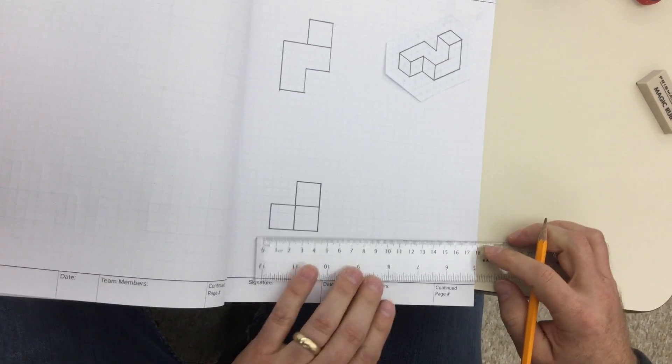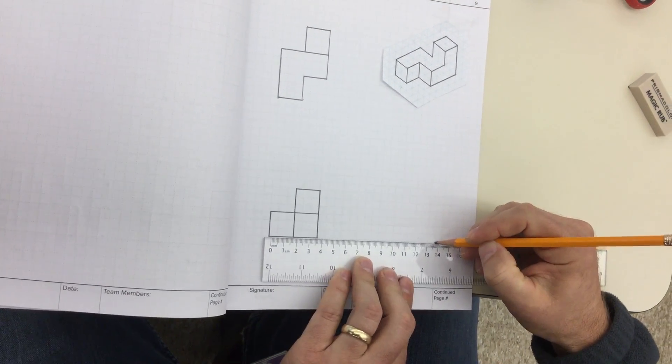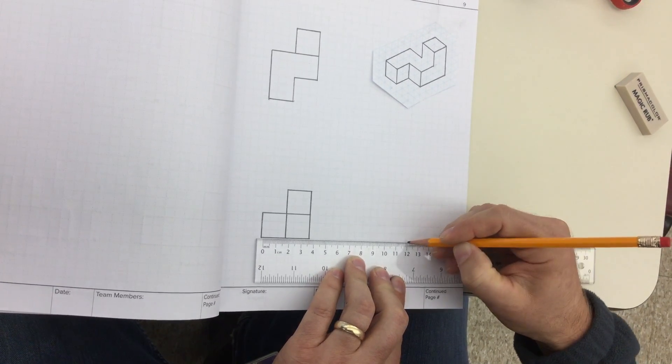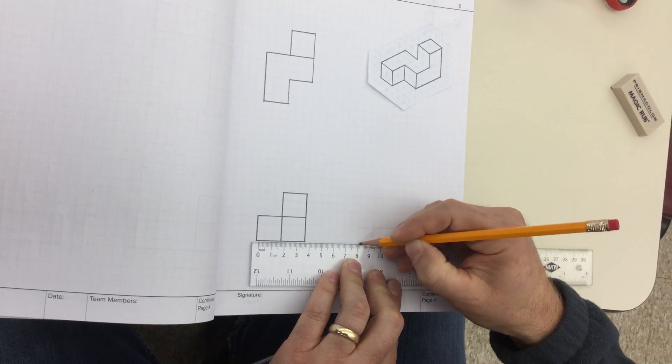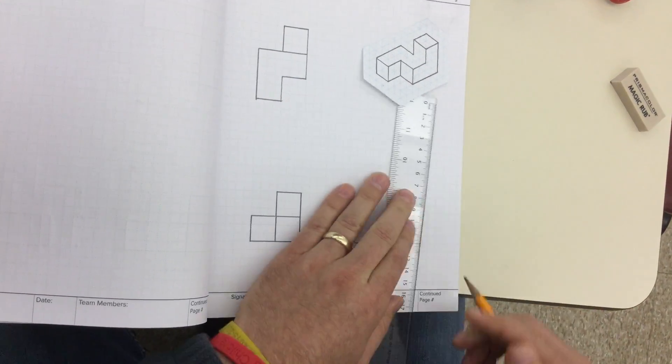So again, we want everything to line up, and I'm going to count nine blocks because there's three cubes. Each cube is three quarters of an inch, and each square on the graph paper is a quarter inch.